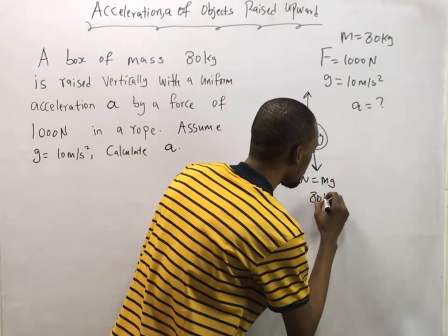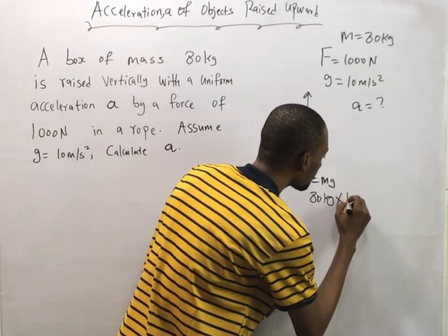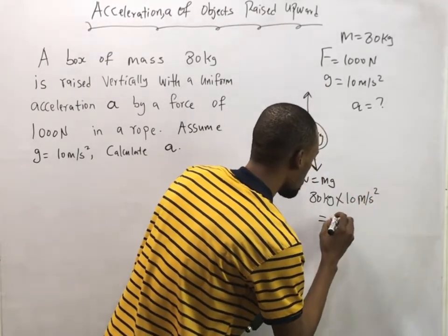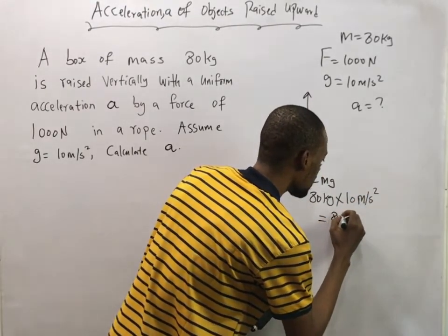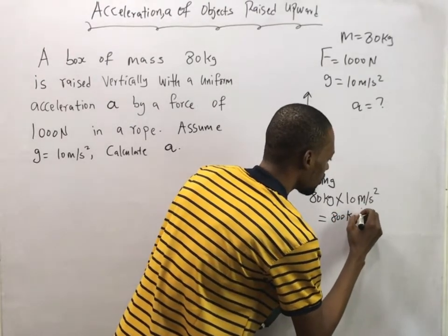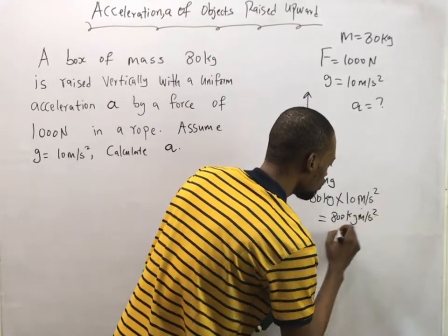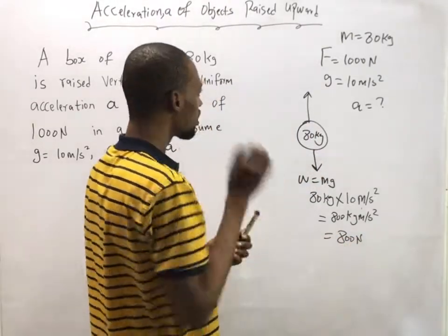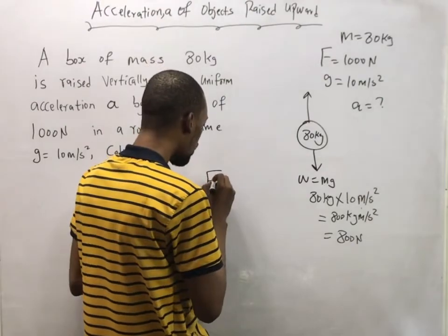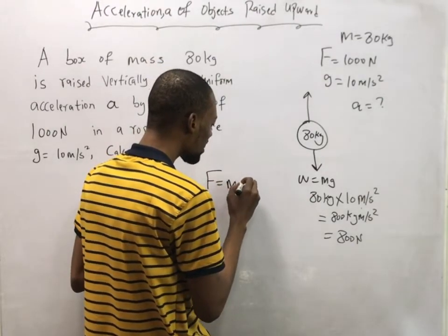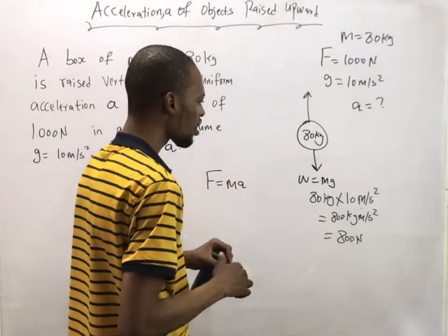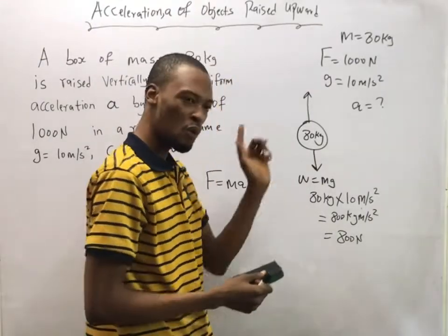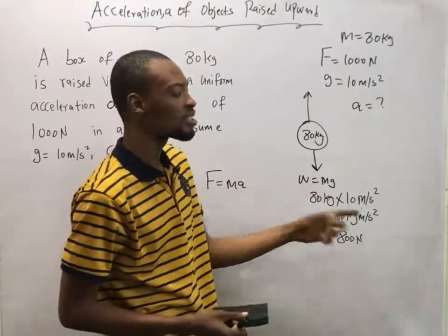80 kg times g, 10 meter per second squared, which will be 800 kilogram meter per second squared, which equals 800 Newton. Record that force equals mass times acceleration.